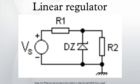More complicated regulators include separate stages of voltage reference, error amplifier, and power pass element. Because a linear voltage regulator is a common element of many devices, integrated circuit regulators are very common. Linear regulators may also be made up of assemblies of discrete solid-state or vacuum tube components.